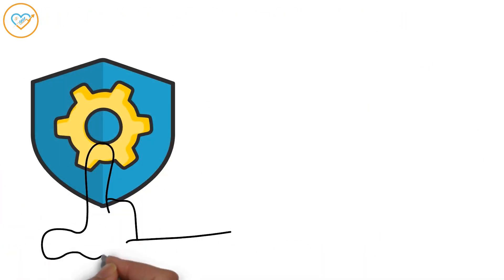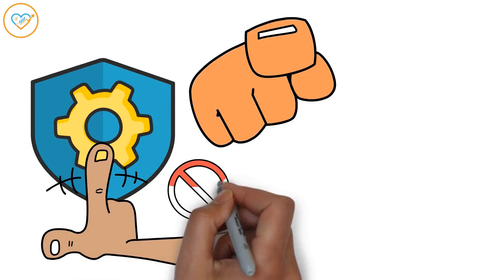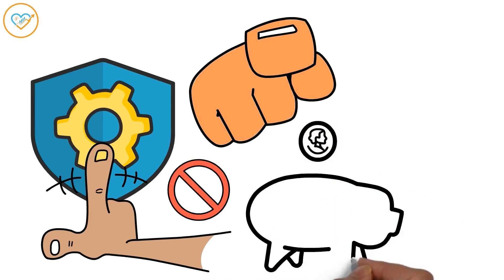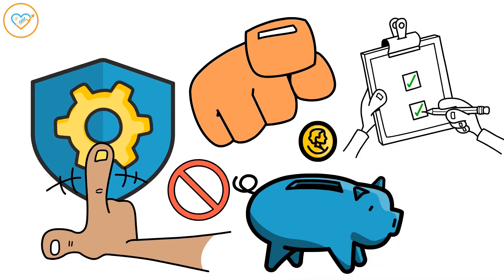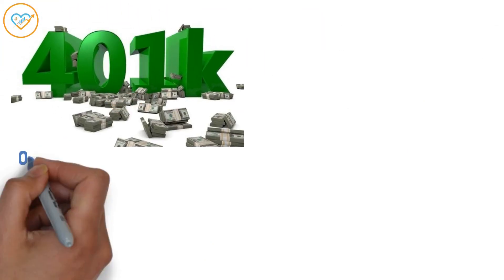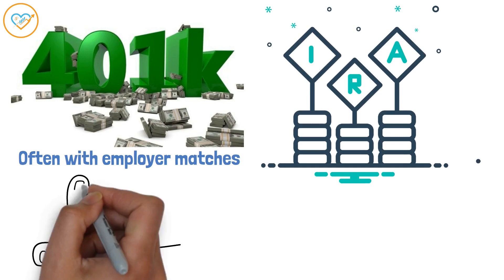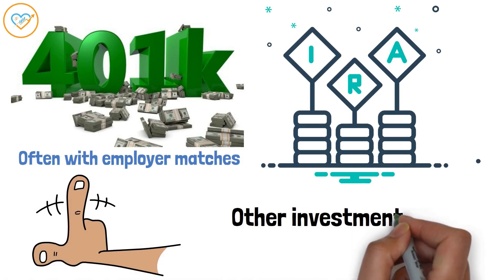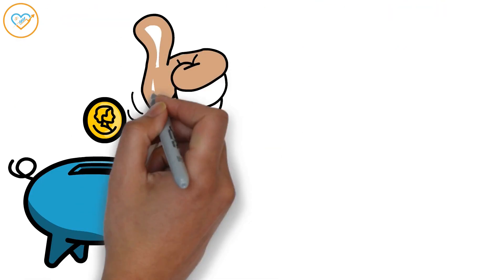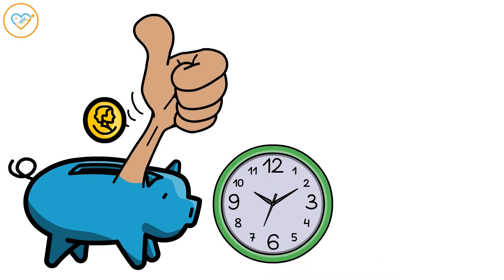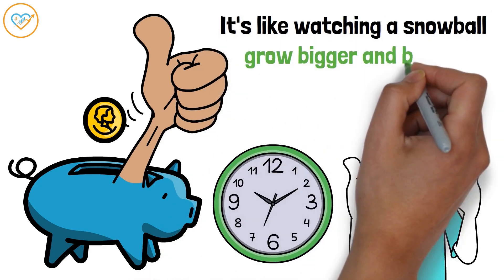The truth is, Social Security alone won't be enough. It's designed to replace a portion of your pre-retirement income, not all of it. To maintain your desired lifestyle, you'll need additional savings. There are several retirement saving options available. A 401k is a popular choice, often with employer matches. An IRA is another great option, offering more flexibility. And don't forget about other investments like stocks, bonds, or real estate. The earlier you start saving, the better. Even small contributions can make a big difference over time, thanks to compound interest. It's like watching a snowball grow bigger and bigger.